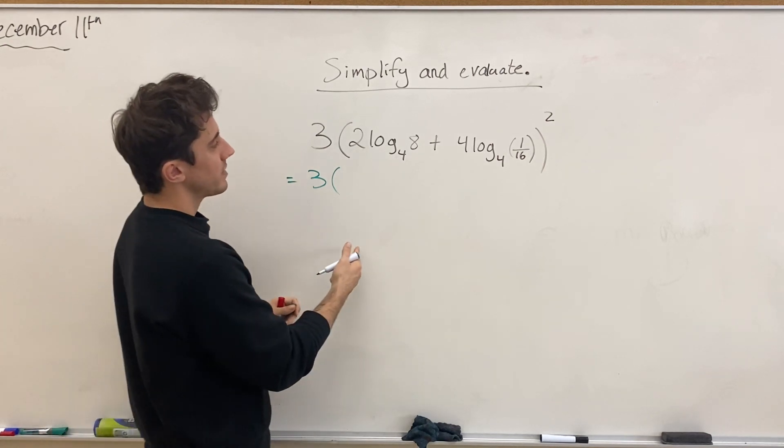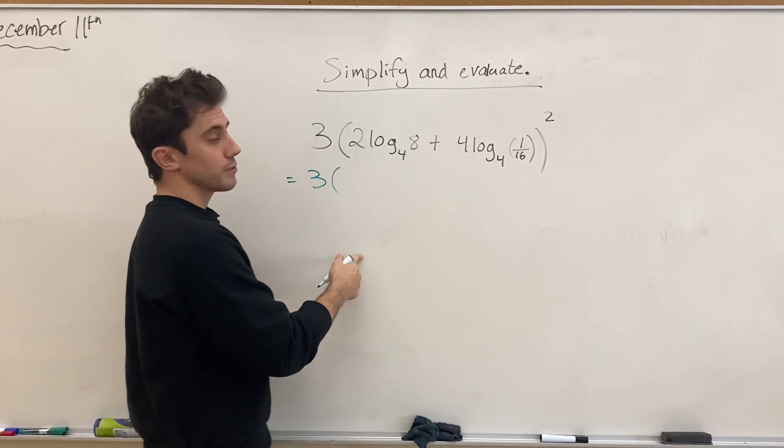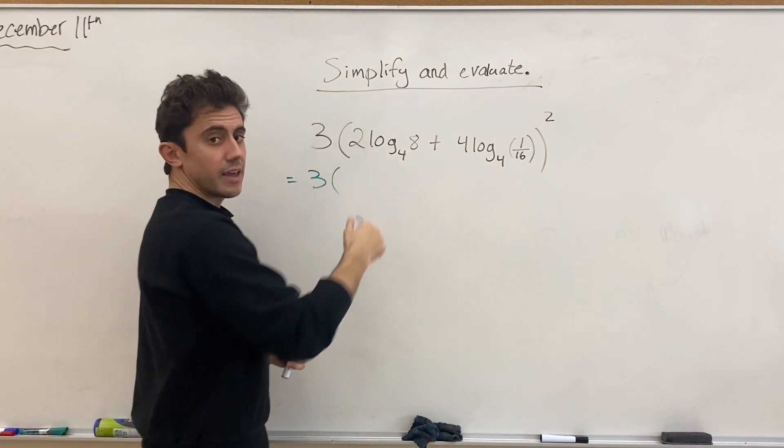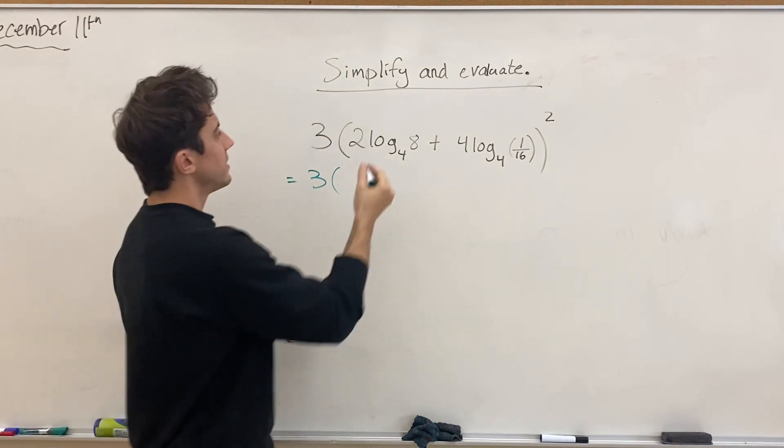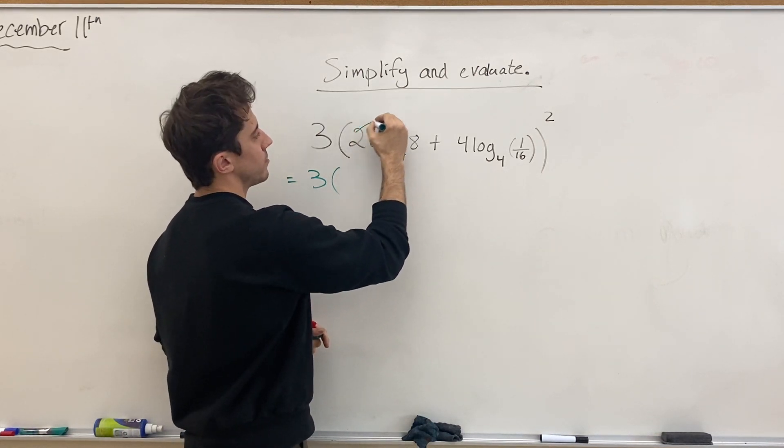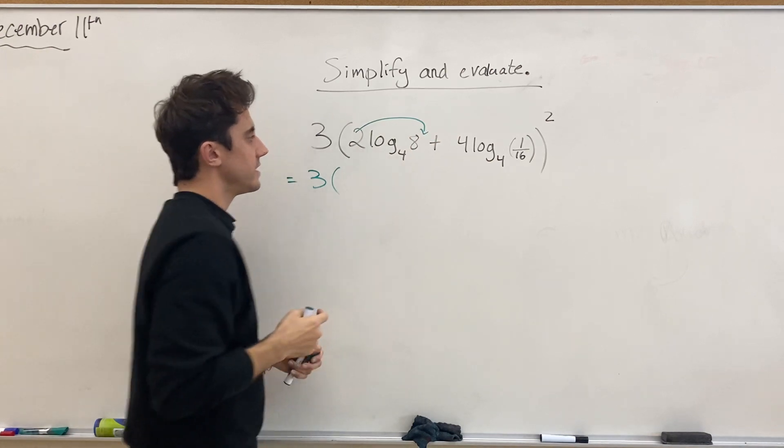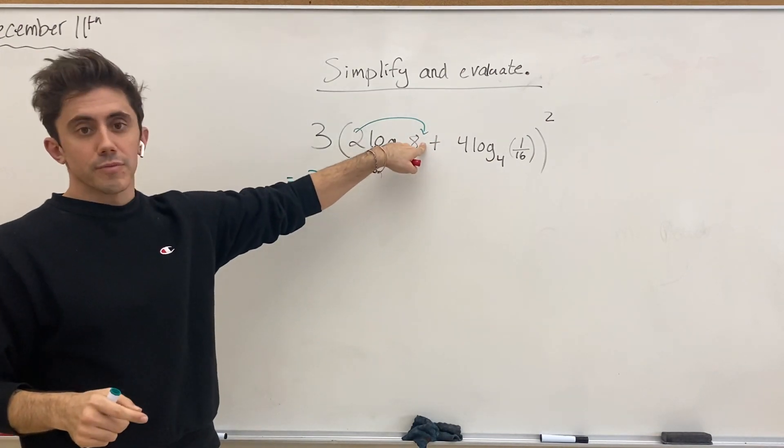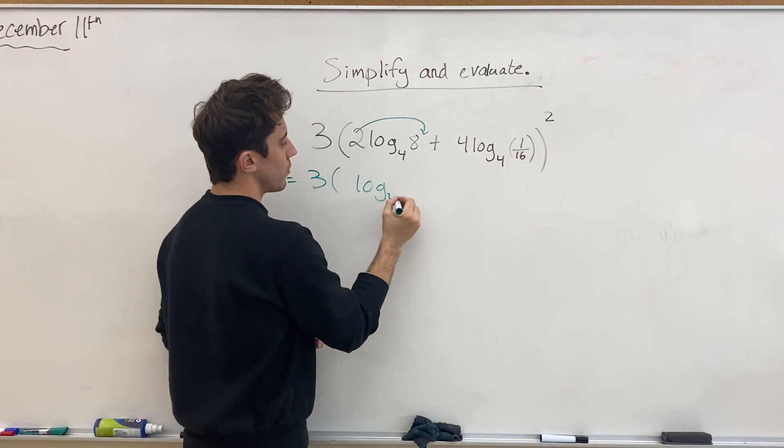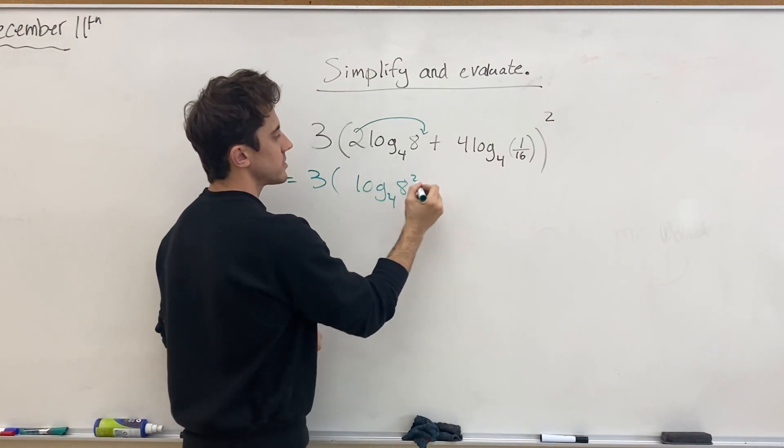But what we can do to make it easier to evaluate with a calculator is notice that we have a 2 as a coefficient out front in front of the log. In one of our log laws, the power rule tells us that a coefficient of a log can pop up as the exponent of our argument. And so we can write this log equivalently as log base 4 of 8 squared.